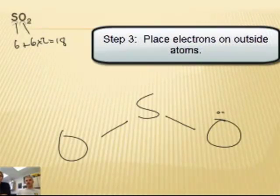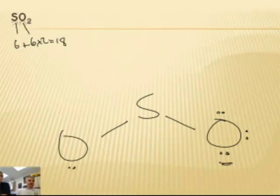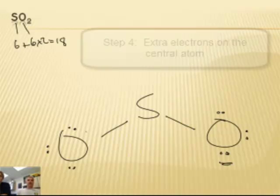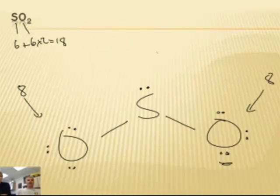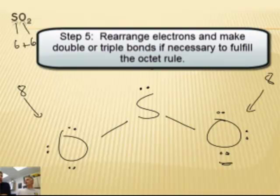Now we go to the outside. 6, 8. He's happy there because he's got 8. 12, 14, 16. And then the extra ones go on the central. So 18. Our oxygens have 8 each, but sulfur is 6. I thought we could get 8. It didn't work.